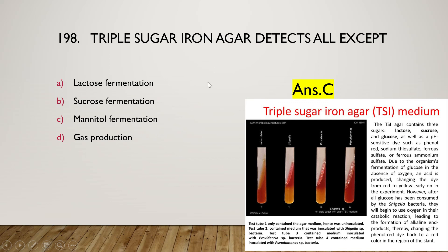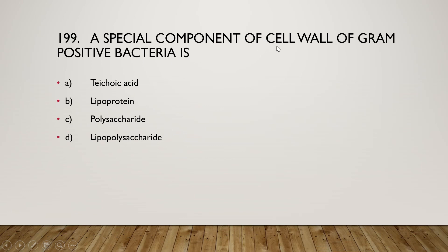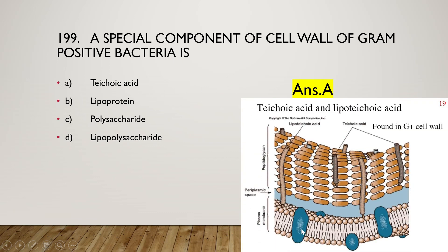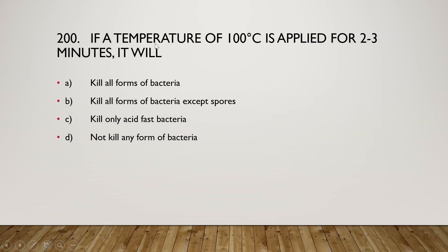The next question: the special component of the cell wall of gram-positive bacteria is teichoic acid, lipoprotein, polysaccharide, or lipopolysaccharide? The right answer is option A, teichoic acid. In the cell wall of gram-positive bacteria, teichoic acids are present within the peptidoglycan layer, visible between the semi-permeable membrane and the outer cell wall.